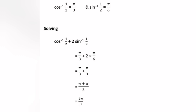Therefore cos⁻¹(1/2) + 2sin⁻¹(1/2) = π/3 + 2×(π/6) = π/3 + π/3 = 2π/3. That is the answer.